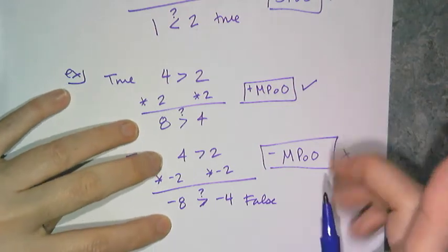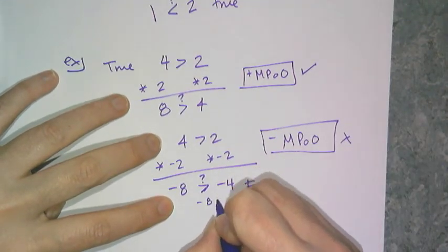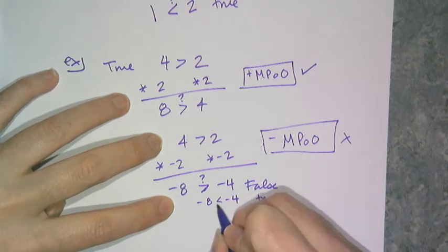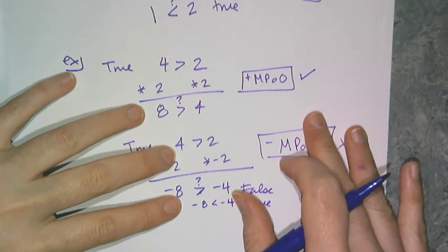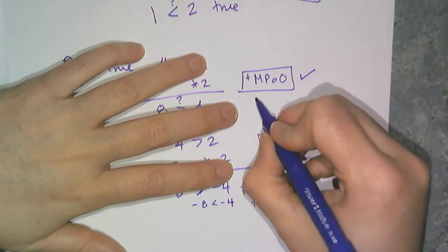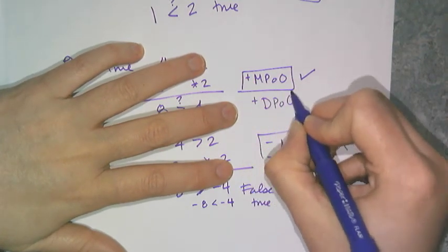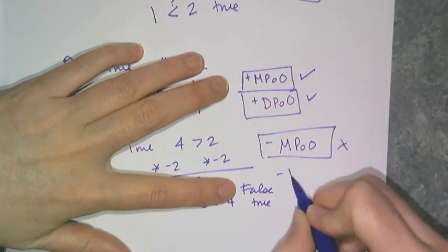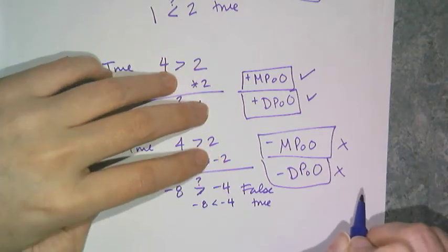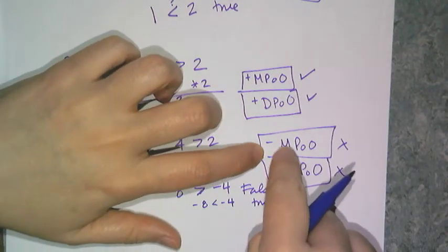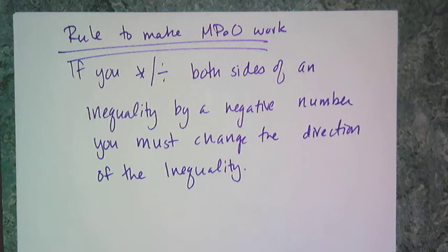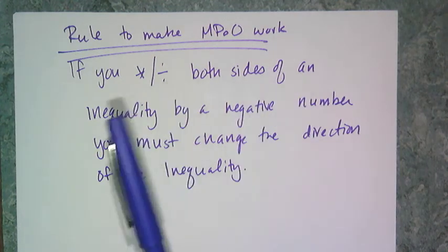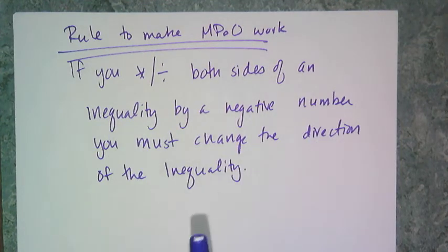I can fix it simply by changing the direction of the inequality. If I write it with the flipped symbol, it becomes true. So if I change the direction of the inequality, I can use the negative multiplication property of order. And because of the way division is defined, I have the positive division property of order — that also works. But the negative division property of order does not work. The rule is: if you multiply or divide both sides of an inequality by a negative number, you must change the direction of that inequality, or else it's not true.